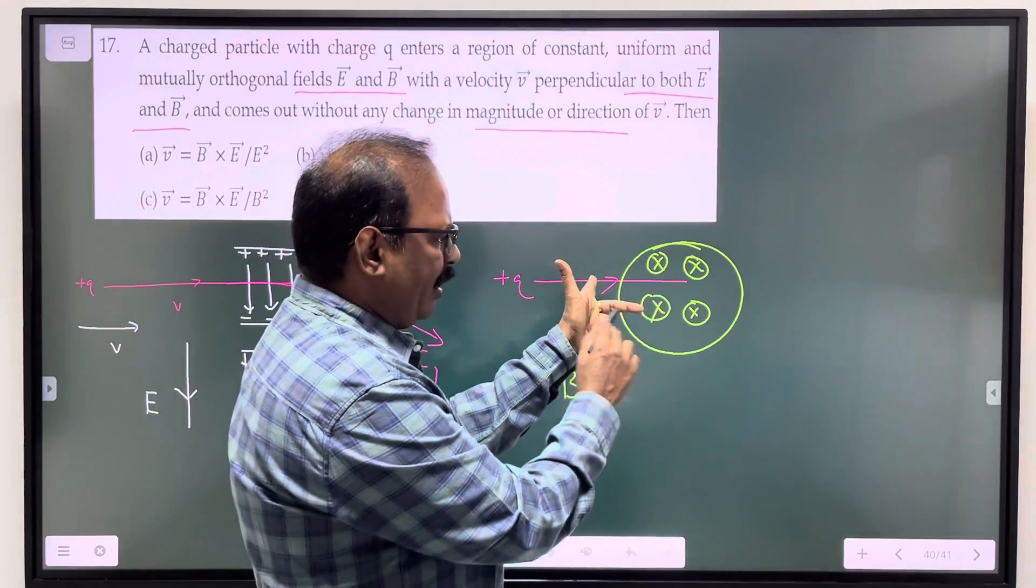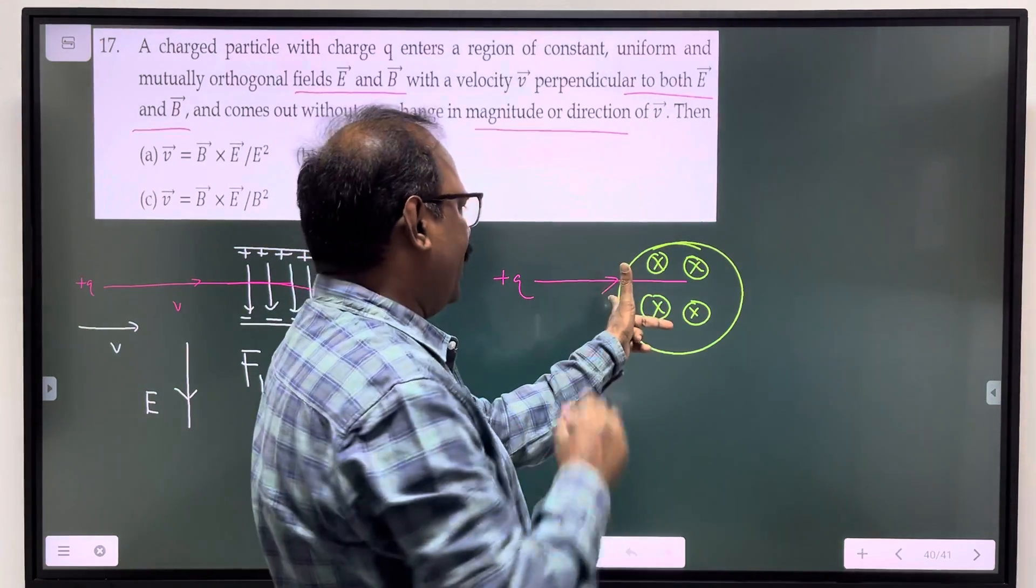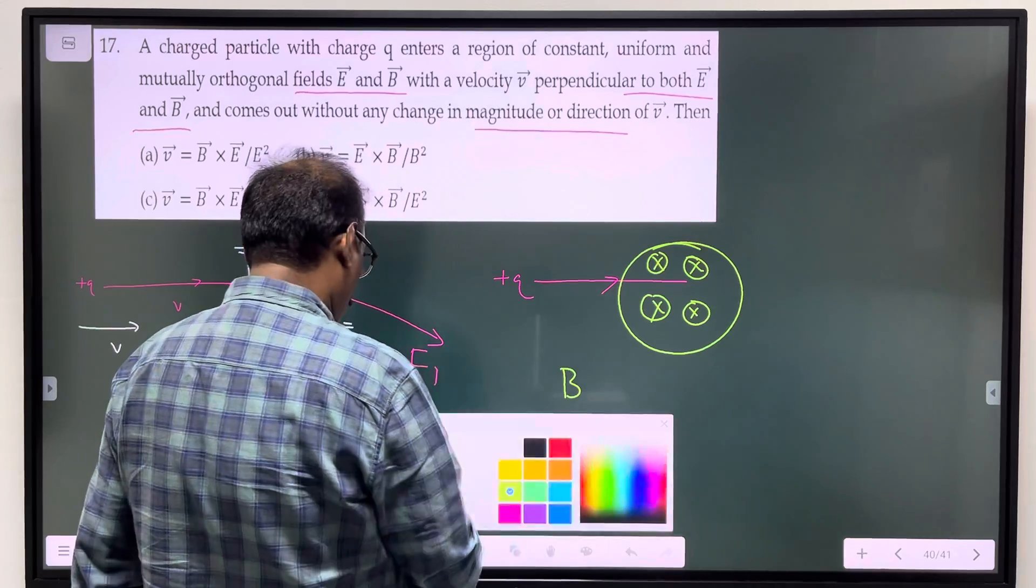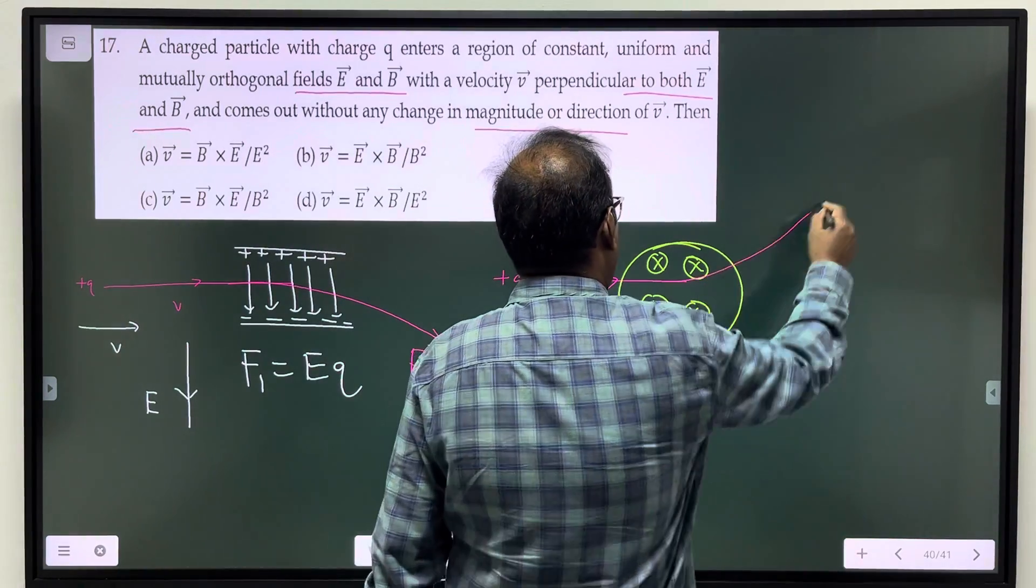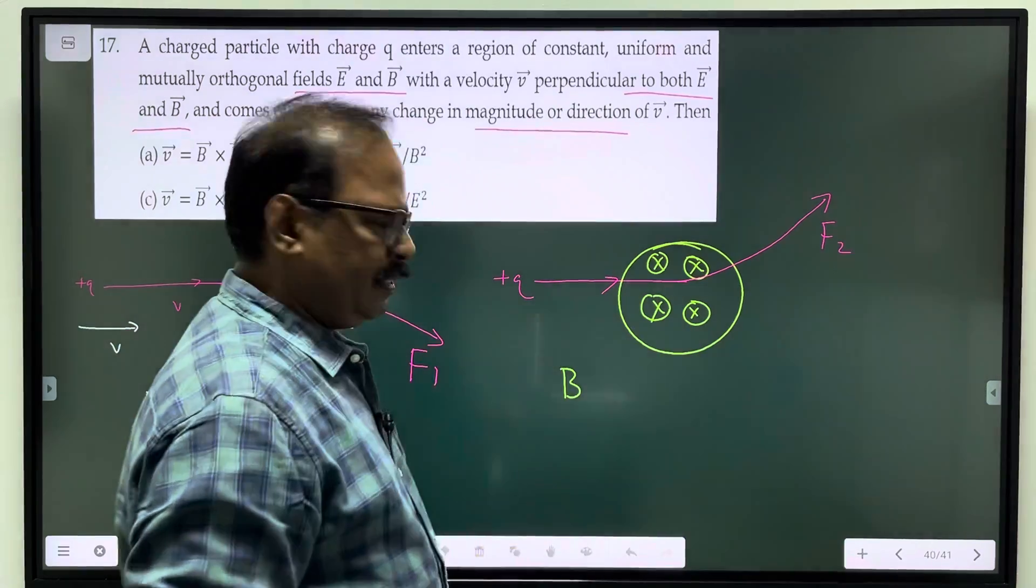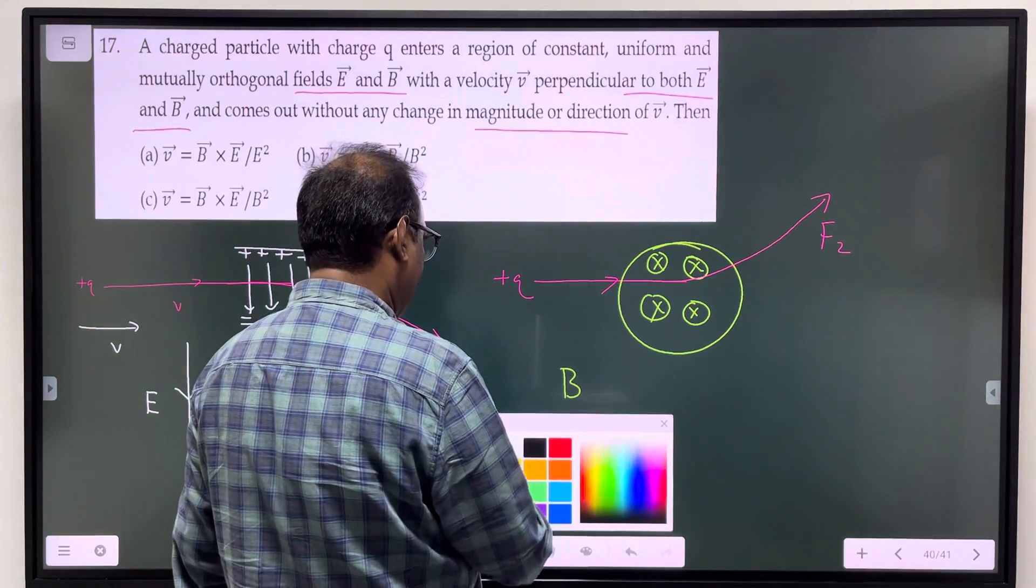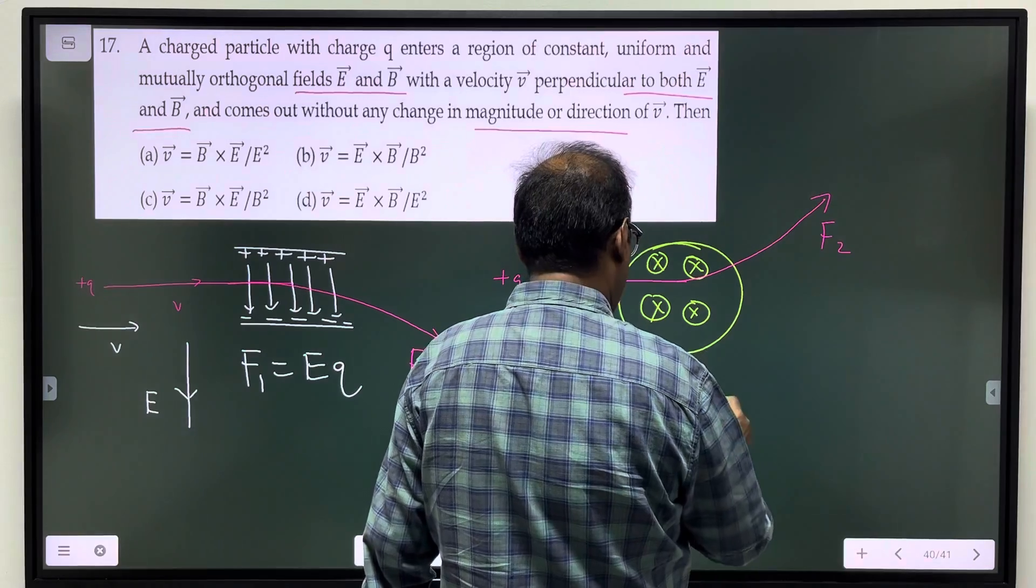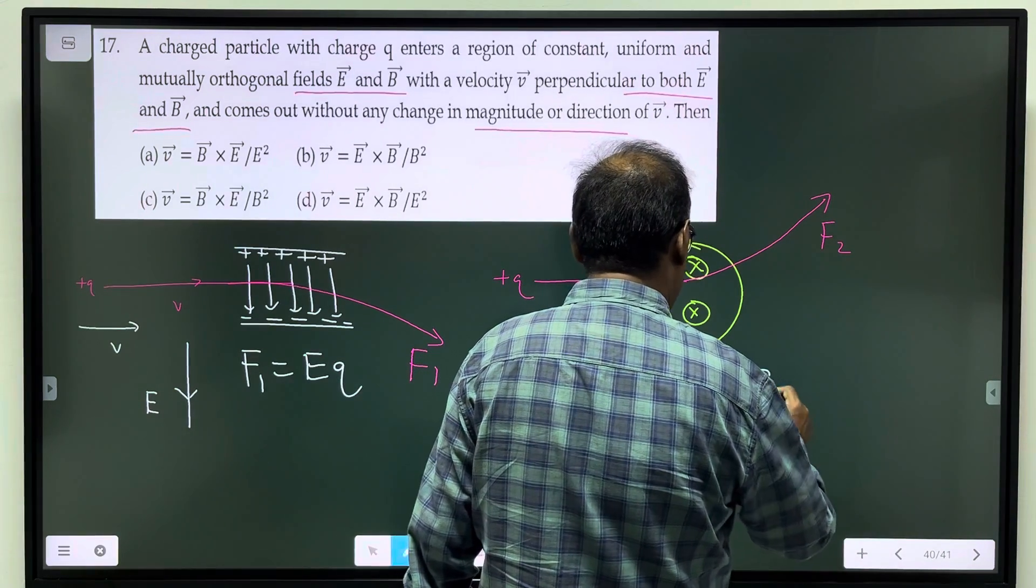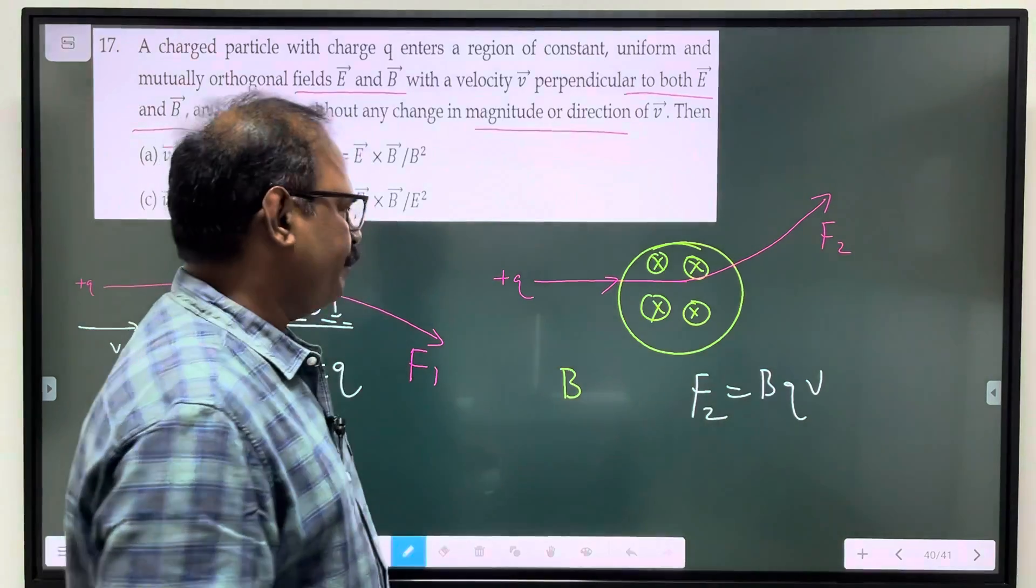The force direction is such that the particle will be deflected upwards. The force by the magnetic field is BQV sin theta, sin 90, which is BQV.